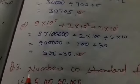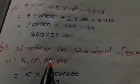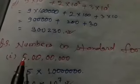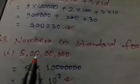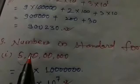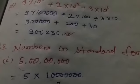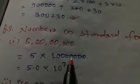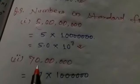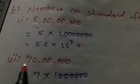Question number 3 is numbers in standard form. The first number is five crore. You write here 5 multiplied by — the number of zeros are one, two, three, four, five, six, seven — so you write 5 × 10 to the power 7. This equals five point zero multiply ten to the power 7. That is the standard form of the given number. Next is seventy lakhs.